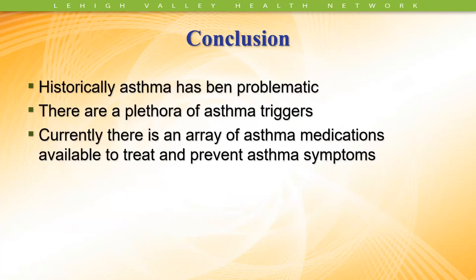That's part one. We reviewed the historical perspective of asthma, some early treatments, current asthma treatment, the epidemiology, and how we treat refractory asthma. In conclusion: historically, asthma has been a challenging and problematic condition; there is a plethora of asthma triggers; and currently there's an array of asthma medications available to treat and prevent asthma symptoms. This concludes part one — hopefully you'll be able to listen to part two later in your series.